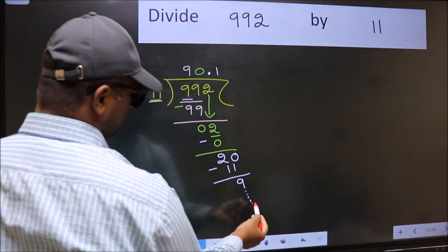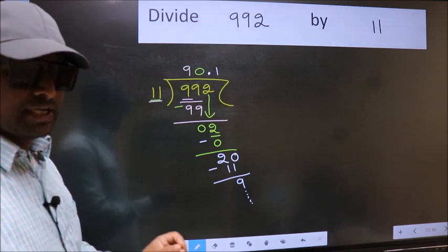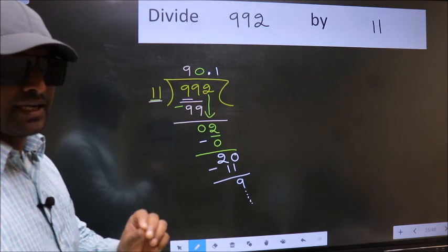And continue the division. I am not doing that. Did you understand where the mistake happens? You should not make that mistake.